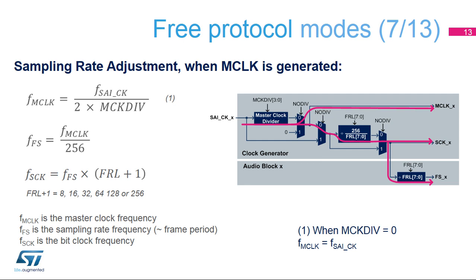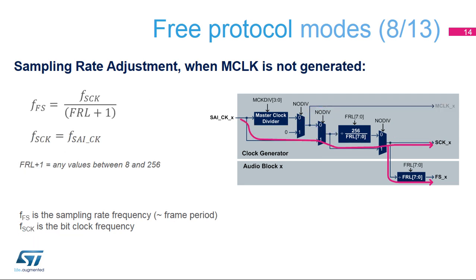The clock generator is needed for master mode communications. It is used to adjust the sampling rate of the serial audio interface. The clock generator provides the root frequency for the MCLK, SCK, and the FS. When the master clock, or MCLK, is generated, the frame length must be a power of 2. The ratio between the FS frequency and the MCLK frequency is set to 256. The clock SAI-CK is provided by the STM32F7's RCC block. When the MCLK is not generated, the frame length can take any value from 8 to 256. In this case, the frequency of the SAI bit clock is directly given by the clock received on the SAI-CK input.